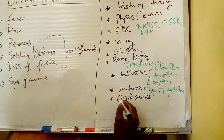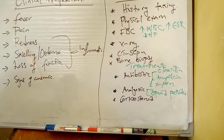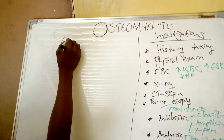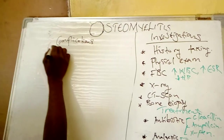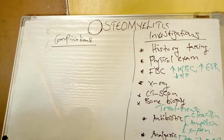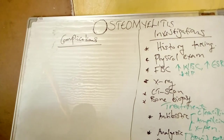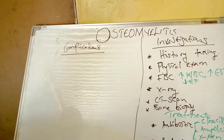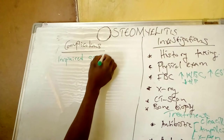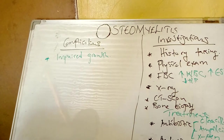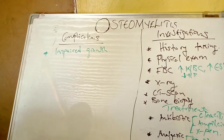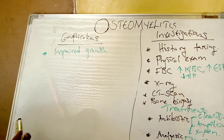Let us now look at some of the complications. Osteomyelitis mostly affects children, and in children it affects the growth plate. If the growth plate becomes distorted or disrupted, there will be impaired growth, meaning the patient's bones are not going to grow because the growth plate has undergone necrosis and is dead.